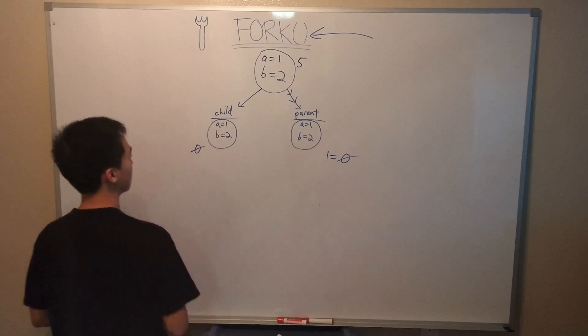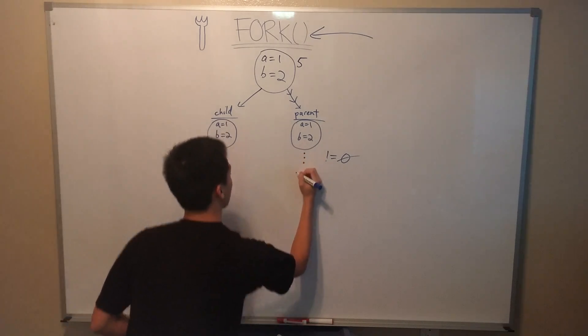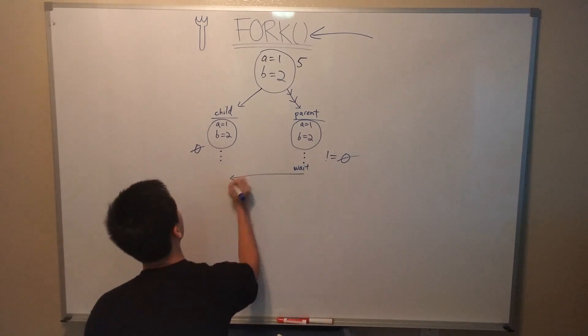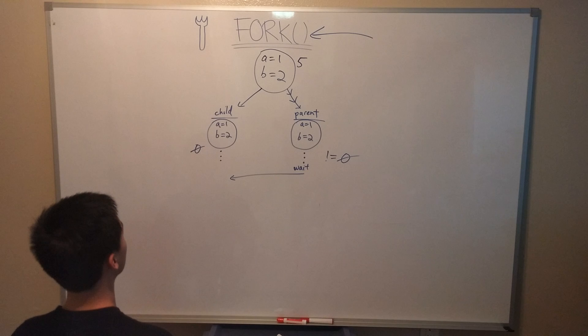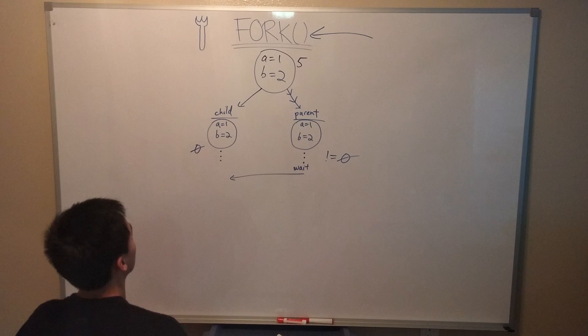After forking, it is unclear as to which process will run first, which is why we utilize the wait system call in the parent, to ensure that the child goes first. Using wait also ensures that the child terminates properly, preventing it from becoming a zombie. We'll go into further details on this in a minute, so hang tight guys.